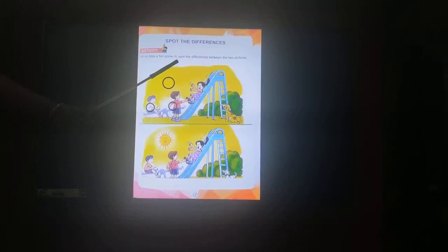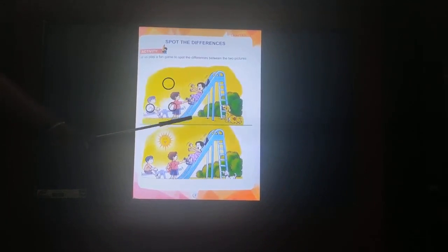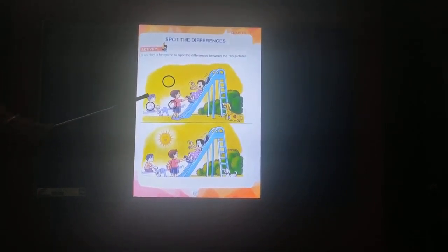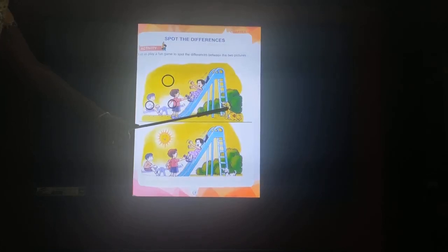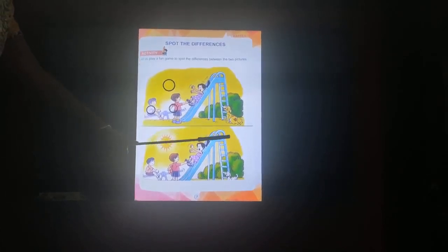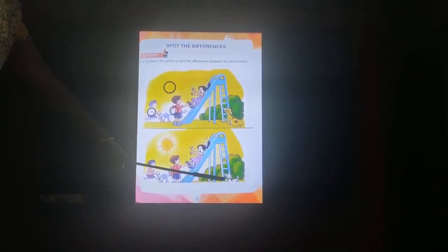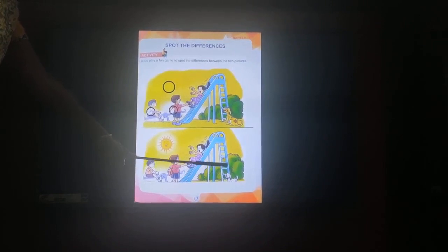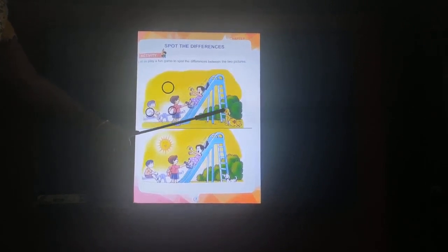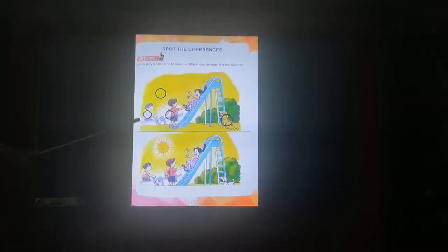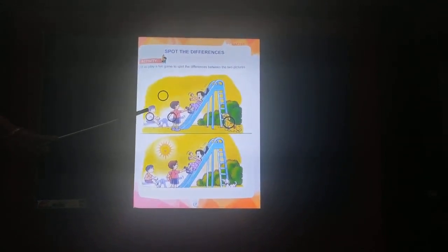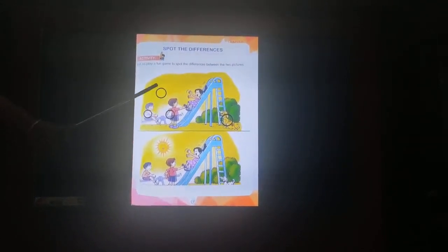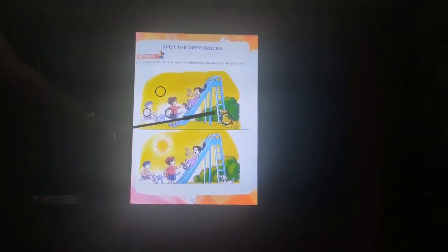Then the fourth one, children. Just see nicely in the picture. Yes — the dog here. See the color of the dog is yellow, and in the second picture it is white. So we will circle it. So altogether how many differences are there? One, two, three and four.